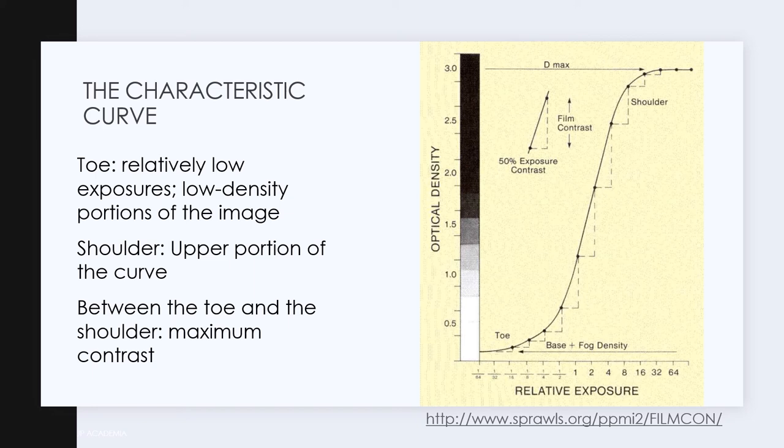The response of the film emulsion to light results in a non-linear characteristic curve for screen-film systems. This is the Hurter and Driffield or H&D curve shown here at the right. It is a plot of the log of the relative exposure on x-axis and the optical density of the processed film on the y-axis.